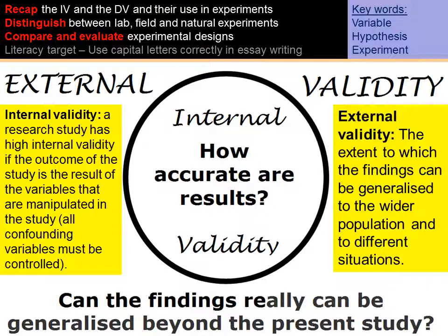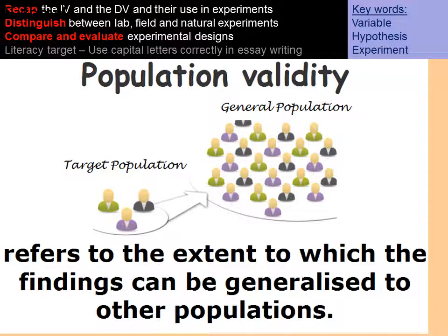A research study has high internal validity if the outcome of the study is the result of the variables that were manipulated, meaning all confounding variables have been controlled. Population validity refers to the extent to which the findings can be generalized to other populations, so your sample needs to be representative of the target population.